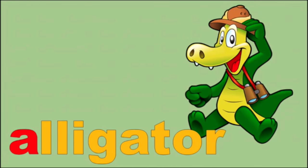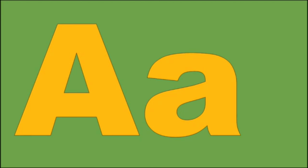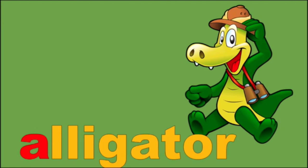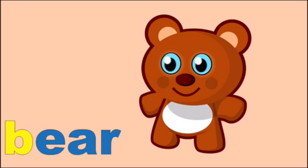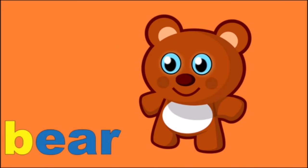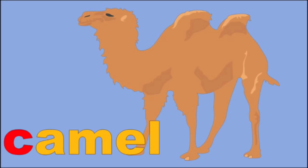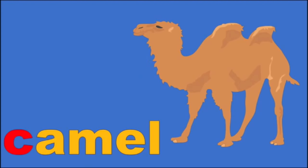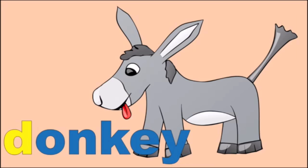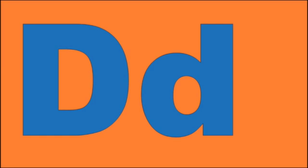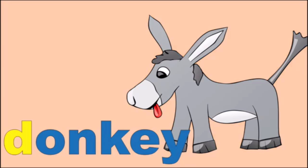A is for Alligator, eh. B is for Bear, b. C is for Camel, k. D is for Donkey, d.